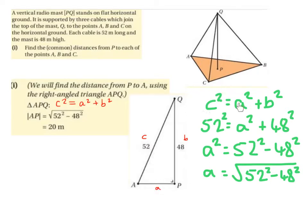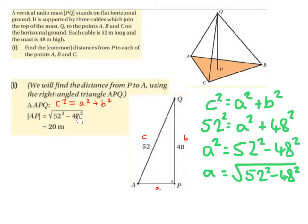So C squared equals A squared plus B squared — C is 52, B is 48. So 52 squared equals A squared plus 48 squared. Bringing the 48 squared over gives A squared equals 52 squared minus 48 squared, and therefore A equals the square root of 52 squared minus 48 squared, which is 20 metres. You can do this any method you want using Pythagoras' theorem.